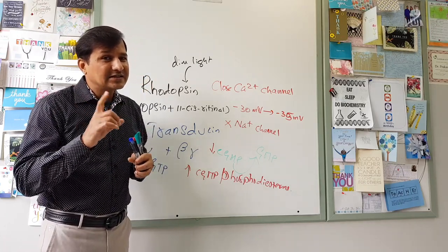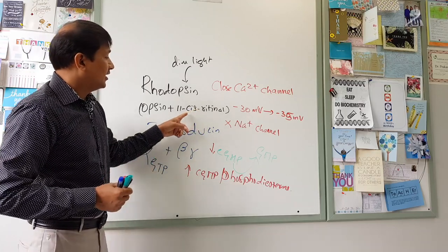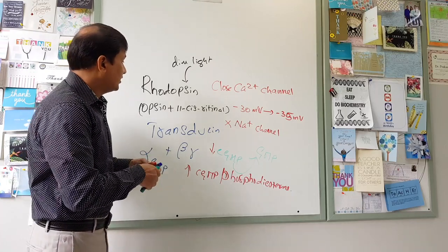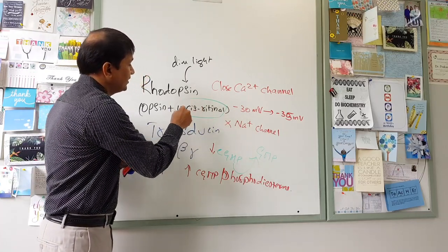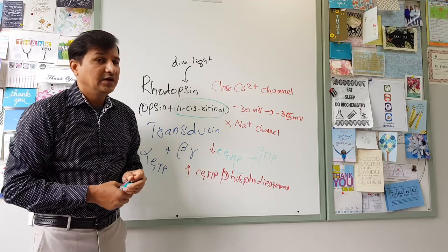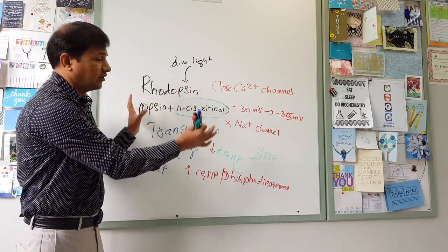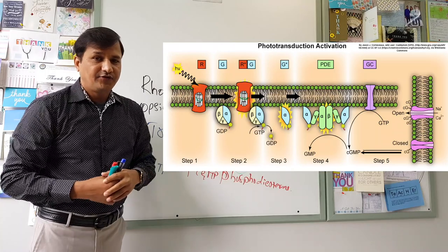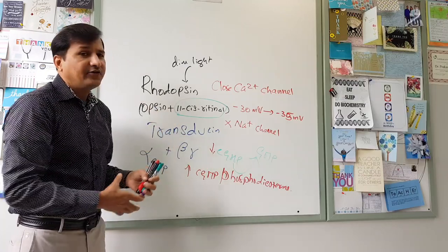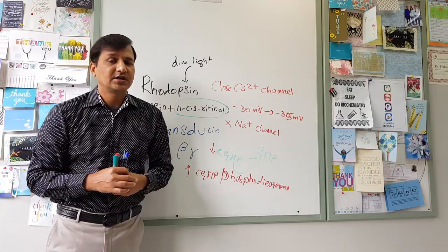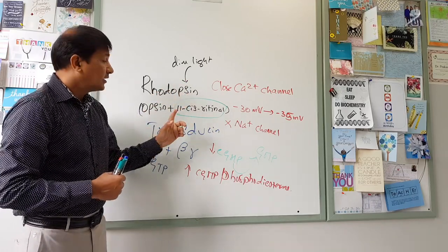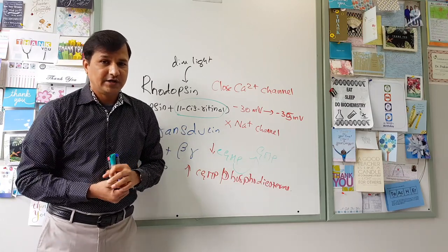Whenever there is an increase in dark adaptation time, that is an indirect indication of vitamin A deficiency. Vitamin A in the form of 11-cis retinaldehyde is the one involved in dim light or low light vision. As explained and shown in the figure, I hope this video has helped you understand the molecular events involved in dim light vision, especially in connection with vitamin A — the 11-cis retinaldehyde form.